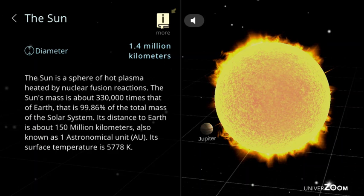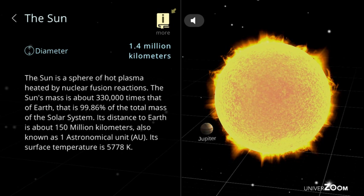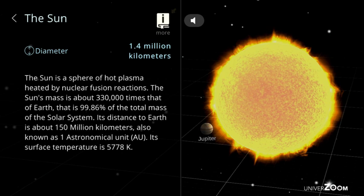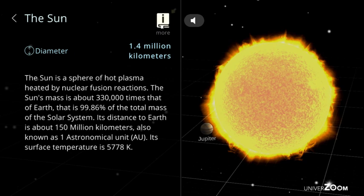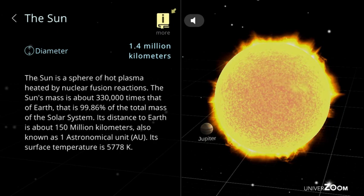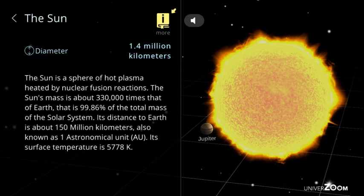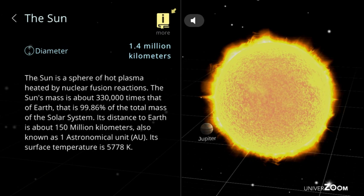The Sun, diameter: 1.4 million kilometers. The Sun is a sphere of hot plasma heated by nuclear fusion reactions. The Sun's mass is about 330,000 times that of Earth, that is 99.86% of the total mass of the solar system. Its distance to Earth is about 150 million kilometers, also known as 1 Astronomical Unit. Its surface temperature is 5,778 K.